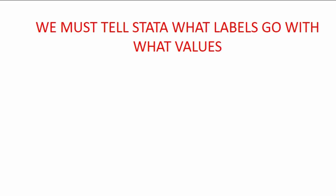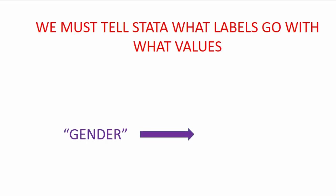We must be the ones to tell Stata what labels go with what values. For example, we will use the same data set that has a variable called gender. We will tell Stata the value number one will be labeled male, and the value number two will be labeled female.